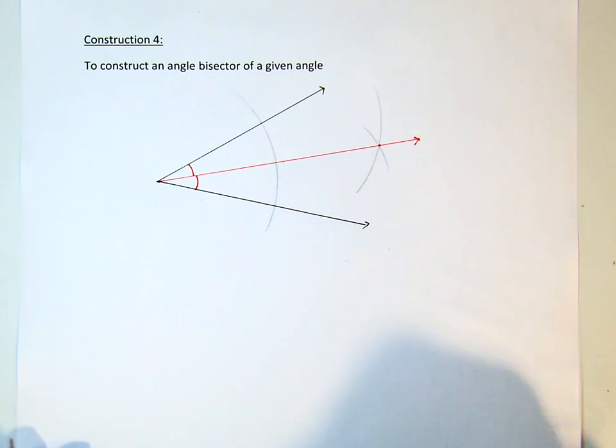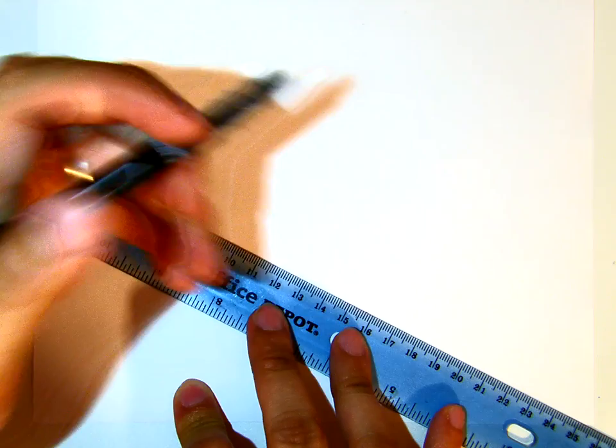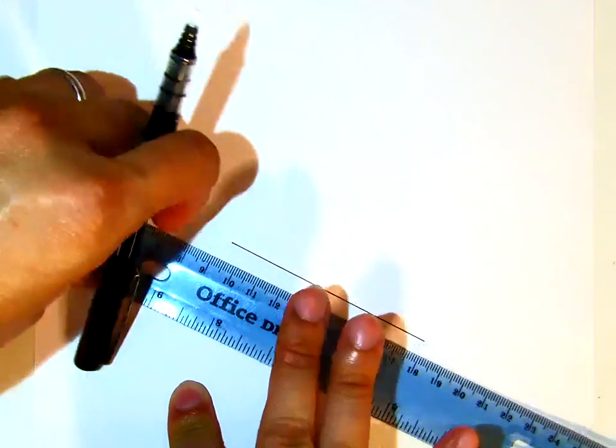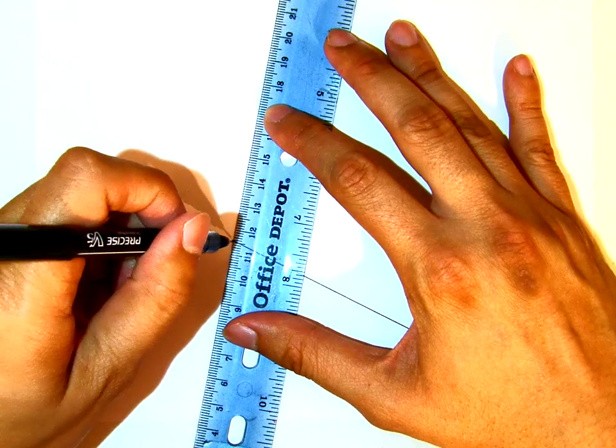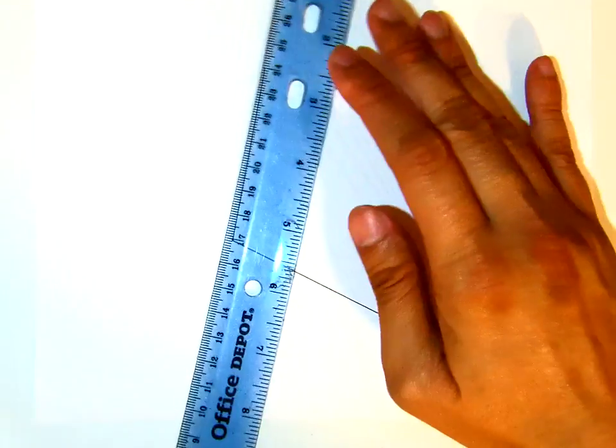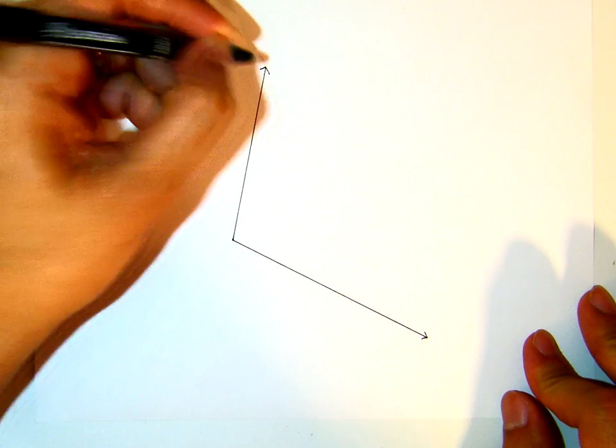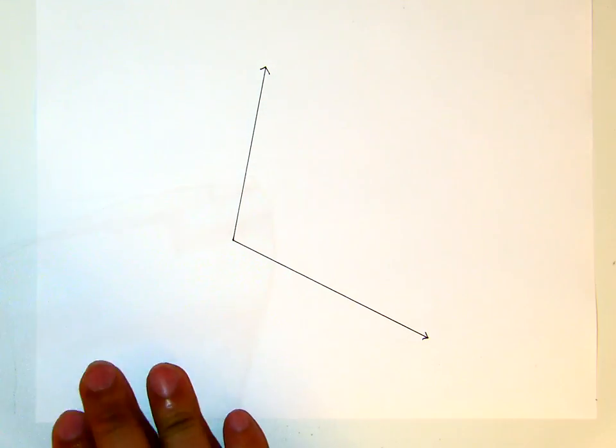The principle will be the same. We will do the same thing. Suppose I construct an obtuse angle. Let's say this is the obtuse angle, more than 90 degrees. Of course, we believe that the angle bisector will be somewhere in the middle there.